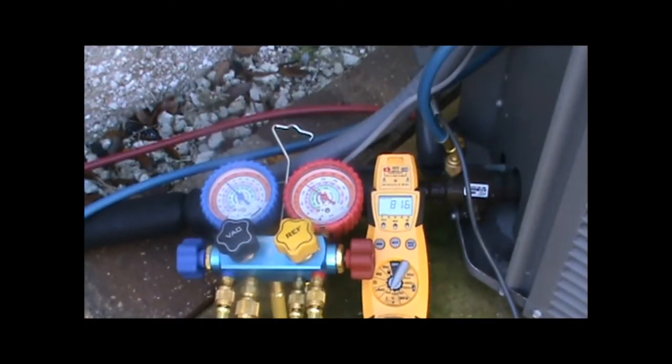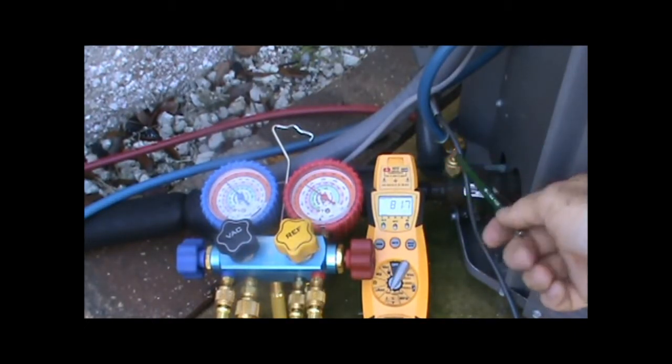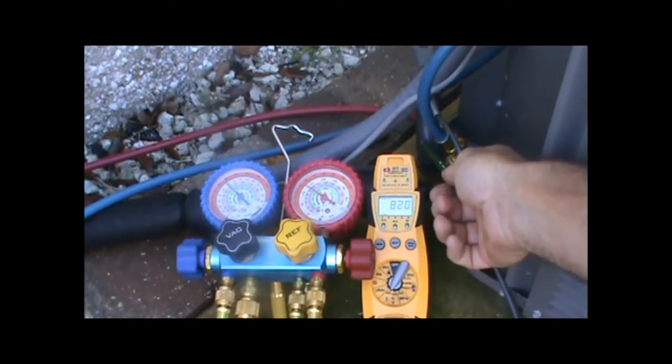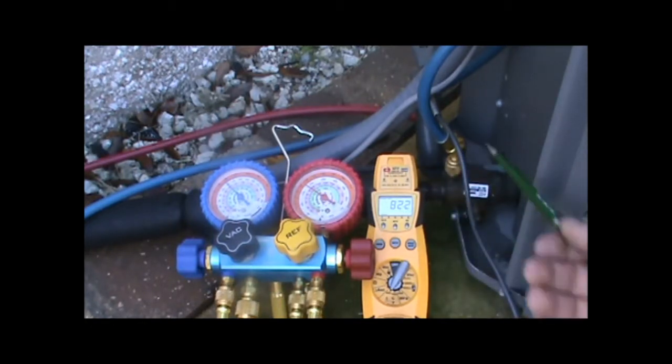Sub-cooling. We have the gauges hooked up. The temperature probe is clamped onto the high side liquid line, measuring the temperature of the refrigeration piping as it leaves the condenser.